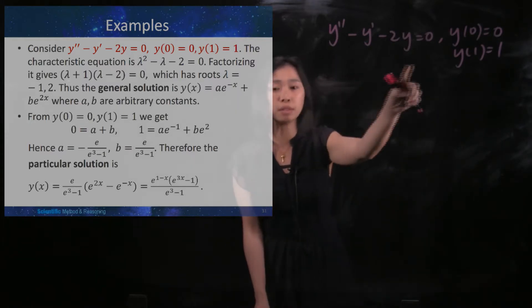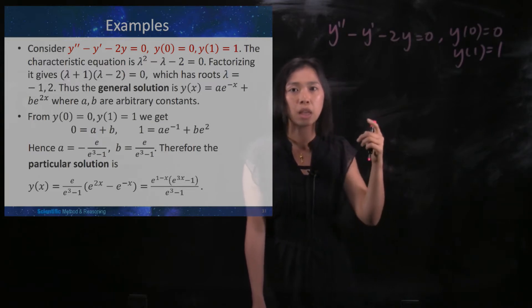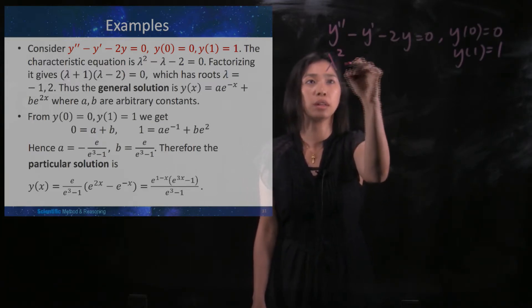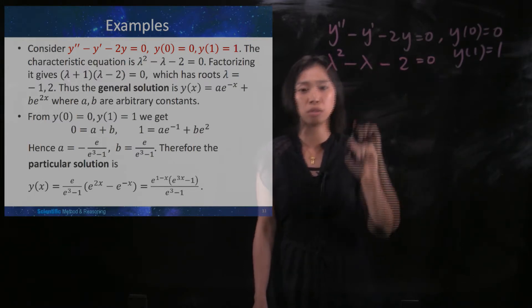From this differential equation, the first thing we have to do is convert it to the characteristic polynomial equation, meaning that you got λ² - λ - 2 = 0.